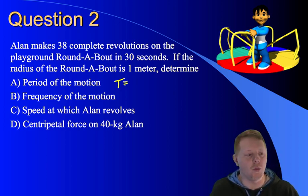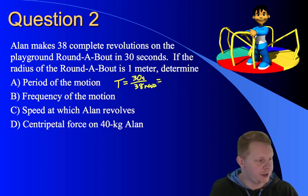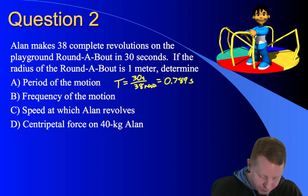Period, the time it takes for one complete revolution. Well, if it takes 30 seconds for 38 revolutions, our period then is just going to be 30 over 38 or about 0.789 seconds.